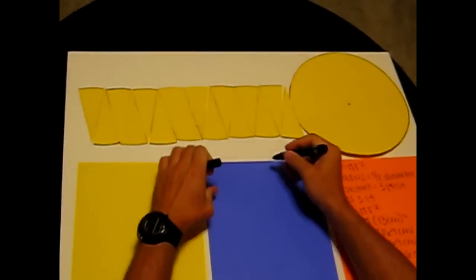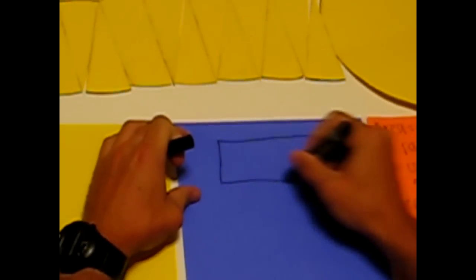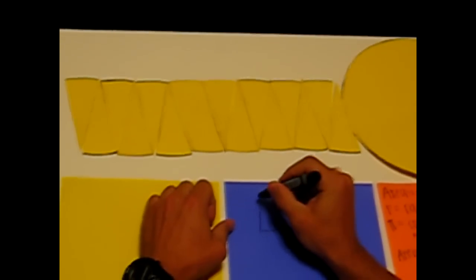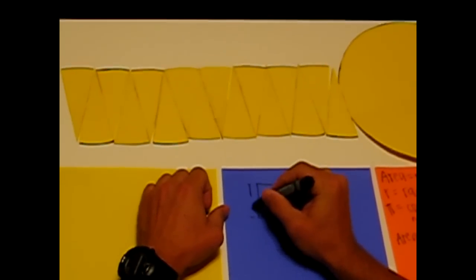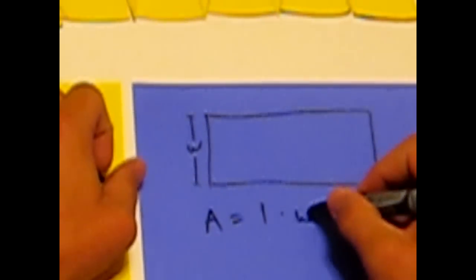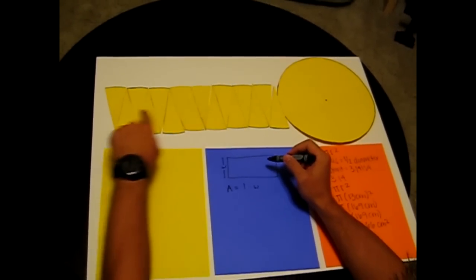We now have our rectangle formed. We are going to draw a rectangle to represent the rectangle from our circle. We know that the area of a rectangle is length times width. Therefore, the radius from our circle is going to be the width of our new formed rectangle.